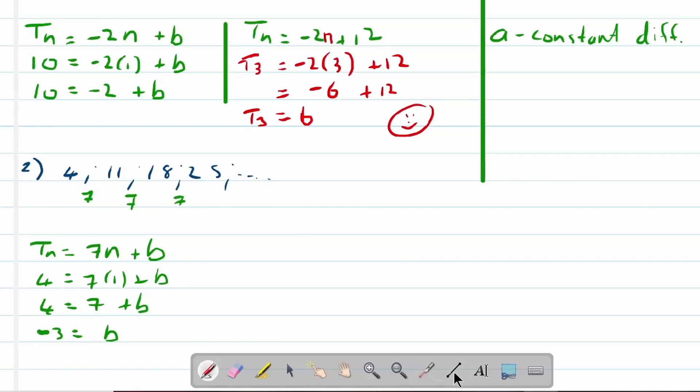As always, let's just quickly test. But let's write down the formula first. So Tn is equal to 7n plus, my apologies, minus 3. Right?